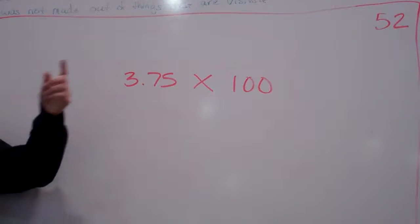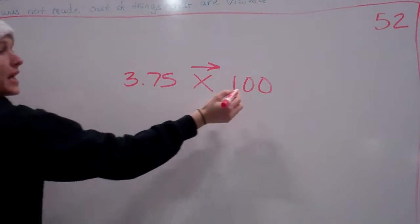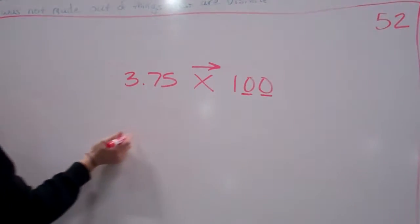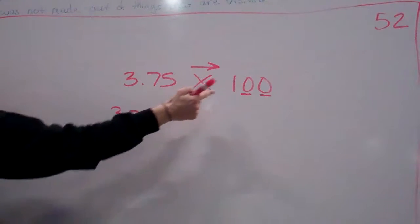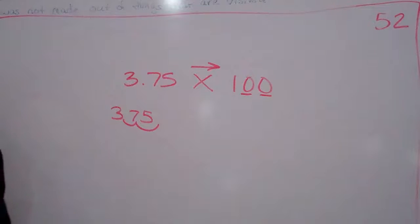Why? Because I'm multiplying. Multiplying, we move to the right. And because there are two zeros, you're going to move 3.75, you're going to move the decimal two places to the right. That's just a review. Everybody remember that?